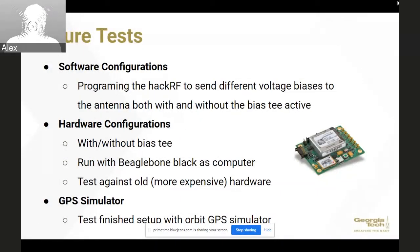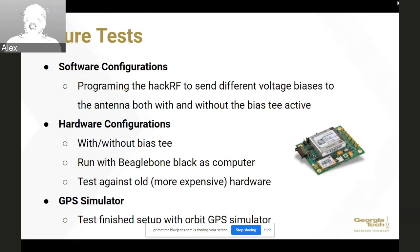For future testing, we'll try different software configurations, mainly varying the voltage bias sent to the antenna and potentially bypassing the bias-T altogether — if we can provide that voltage through the HackRF software and save the space the bias-T takes up, that would be great. For hardware configurations, we'll test with and without the bias-T, run it with the BeagleBone Black as the main computer as it will be in orbit, and test our new system against older, proven — and more expensive — hardware. Finally, we want to test against a GPS simulator that sends actual GPS signals into the HackRF simulating an object in orbit, so we can verify that our hardware and software match expected orbital position fix results.